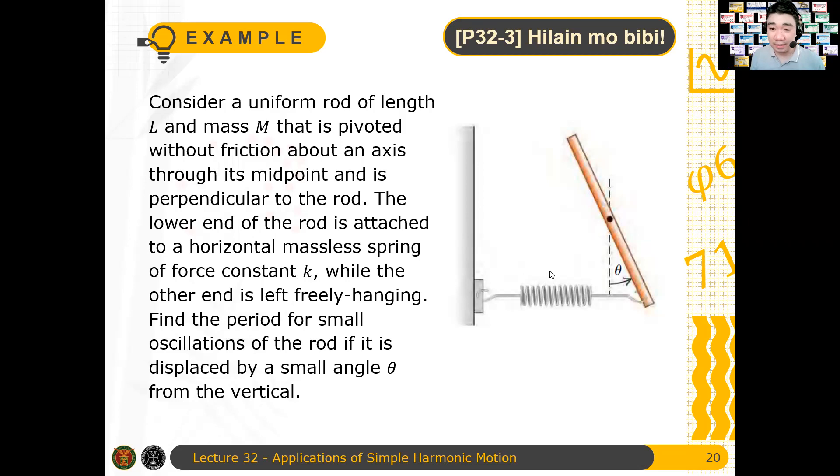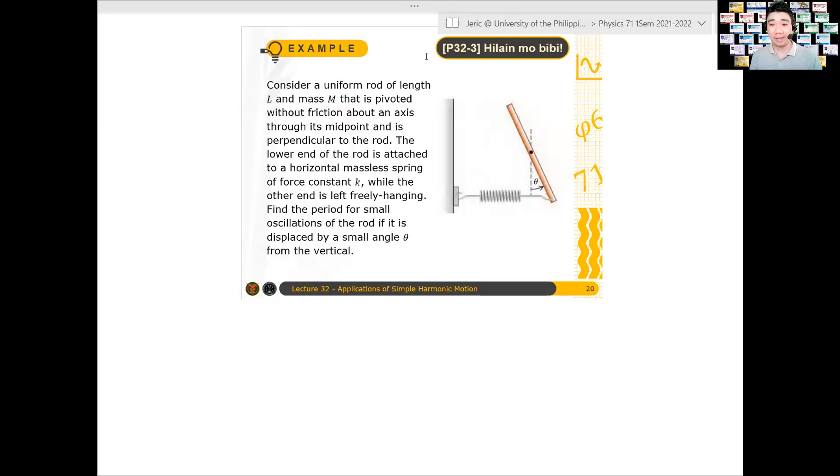Find a period for small oscillations of the rod if it is displaced by a very small angle theta from the vertical. So obviously, since there's a spring here, what happens is the rod will oscillate back and forth. It will rotate back and forth. It will be periodic. And for small values of theta, what will be the period of small oscillations? So that's what we need to do. Okay, so I'll just show the solution to this problem.